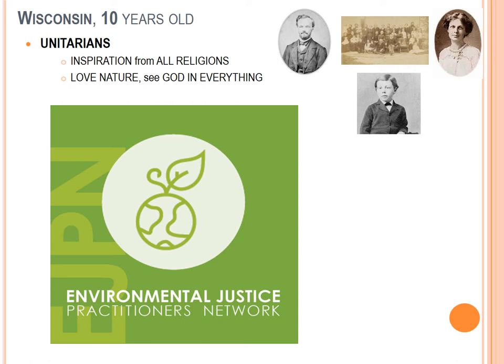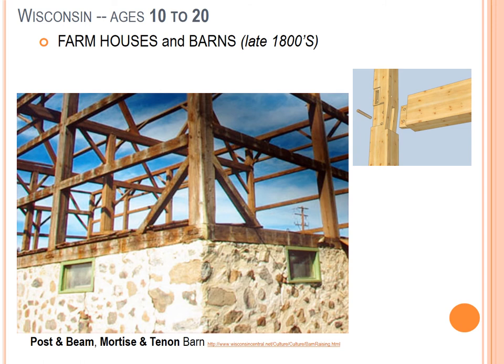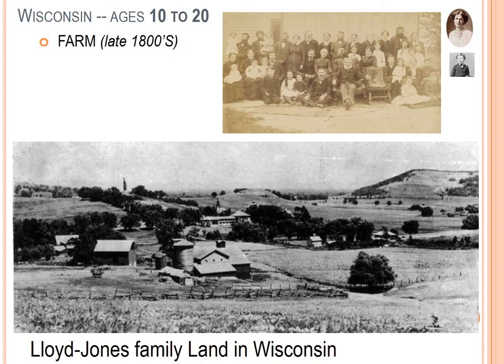Farm life is another key influence. He's growing up in Wisconsin farmland. The Lloyd-Jones family land in Wisconsin was very much an influence on Frank Lloyd Wright throughout his whole life, even though he moved away at a young age and then moved back much later.